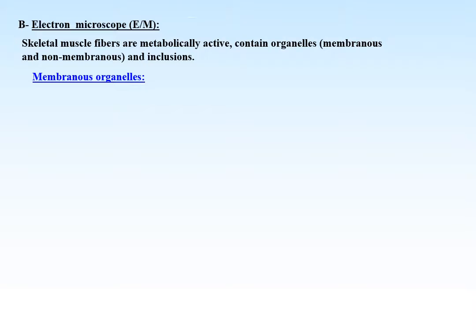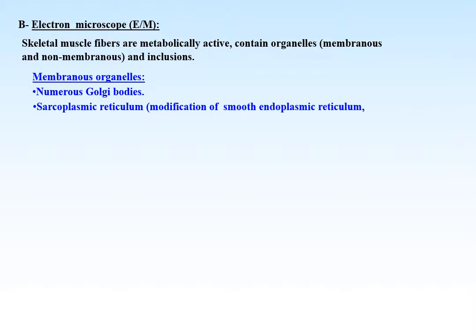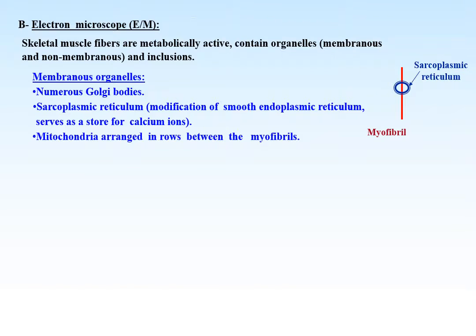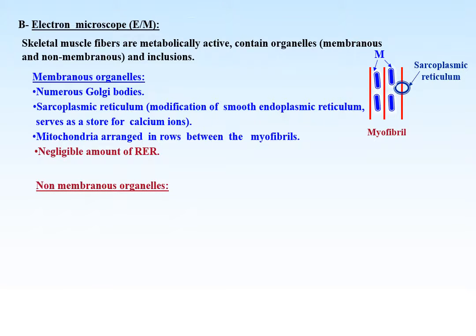By electron microscope, skeletal muscle fibers are metabolically active and contain both membrane and non-membrane organelles and inclusions. Membrane organelles include numerous Golgi bodies and sarcoplasmic reticulum, which is a modification of smooth endoplasmic reticulum. The sarcoplasmic reticulum serves as a store for calcium ions and is present associated with each myofibril. Mitochondria are arranged in rows between the myofibrils. There is a negligible amount of rough endoplasmic reticulum.